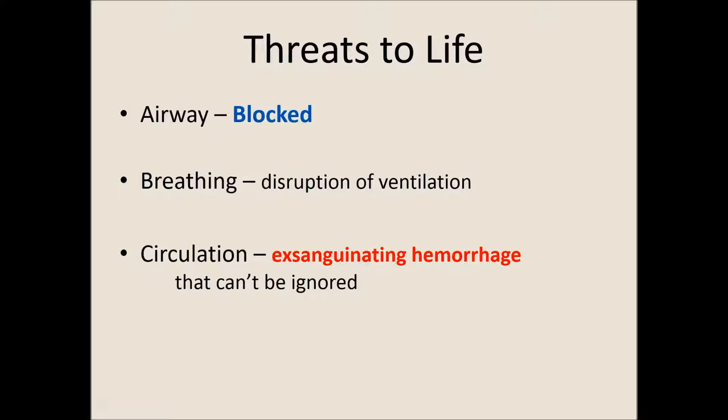Next is threats to life — threats to airway, breathing, and circulation. If our airway is blocked, that's a big threat; the tongue is the biggest violator, so position that airway correctly. Then threats to breathing: disruptions in ventilation — sucking chest wounds and things like that need to be taken care of now. And then exsanguinating hemorrhage that just can't be ignored — they're bleeding all over the place, you need to slap the tourniquet on quickly.